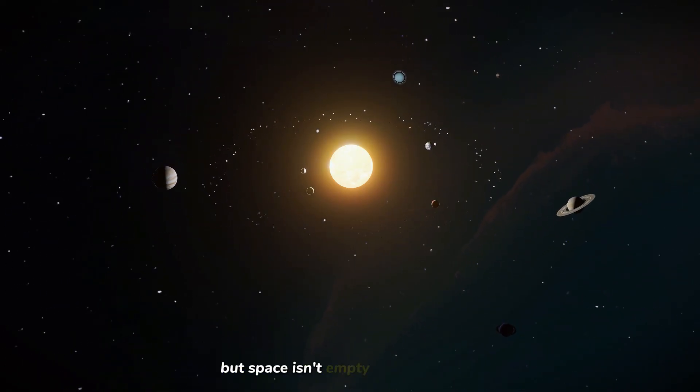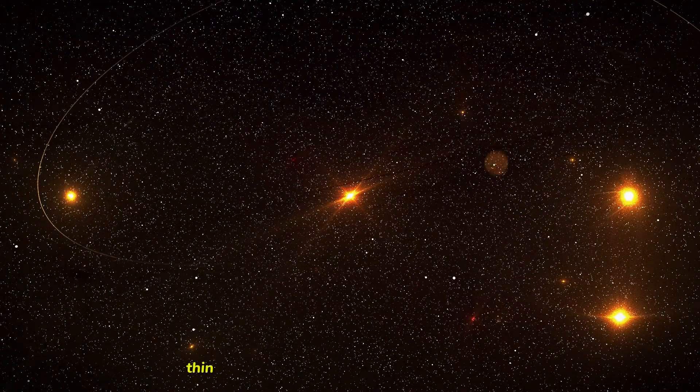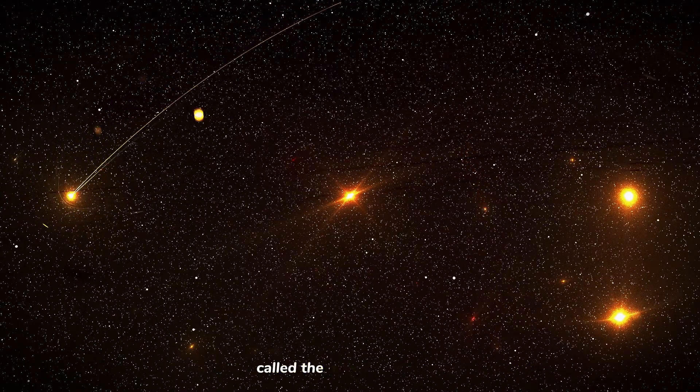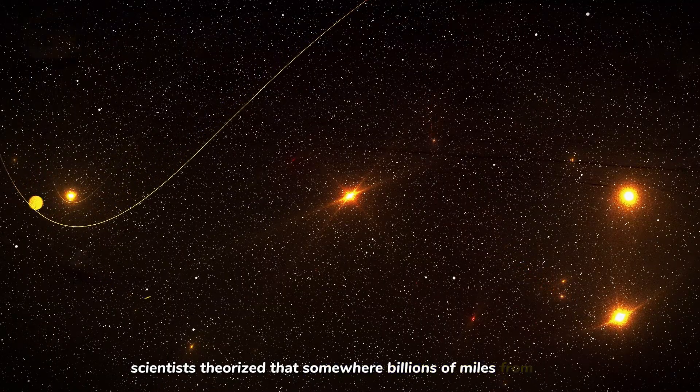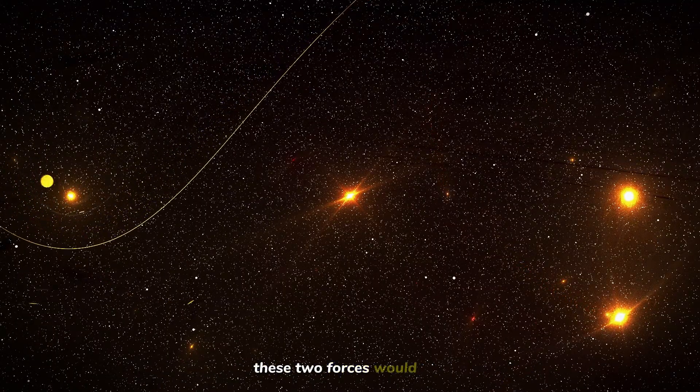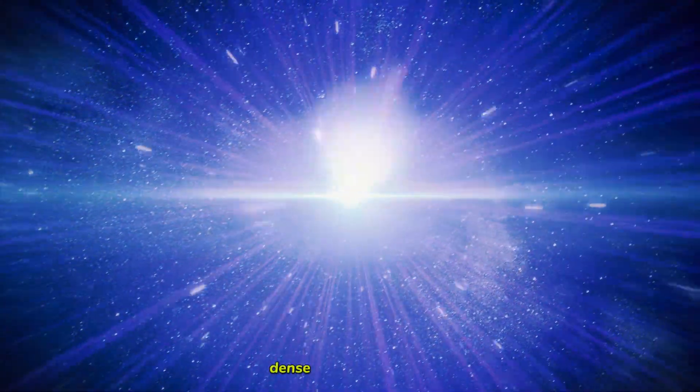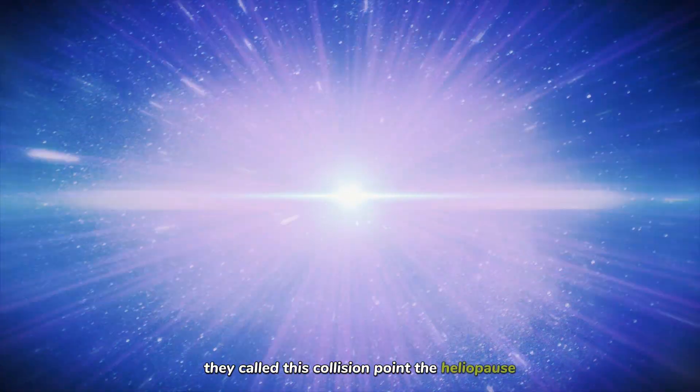But space isn't empty. Between the stars, there's another kind of matter: thin, cold gas and dust drifting through the galaxy called the interstellar medium. Scientists theorized that somewhere, billions of miles from the sun, these two forces would collide. The hot, fast solar wind slamming into the cold, dense interstellar medium. They called this collision point the heliopause.